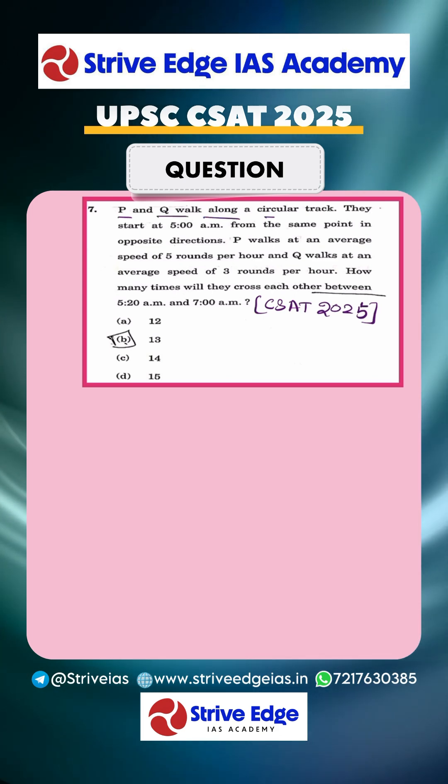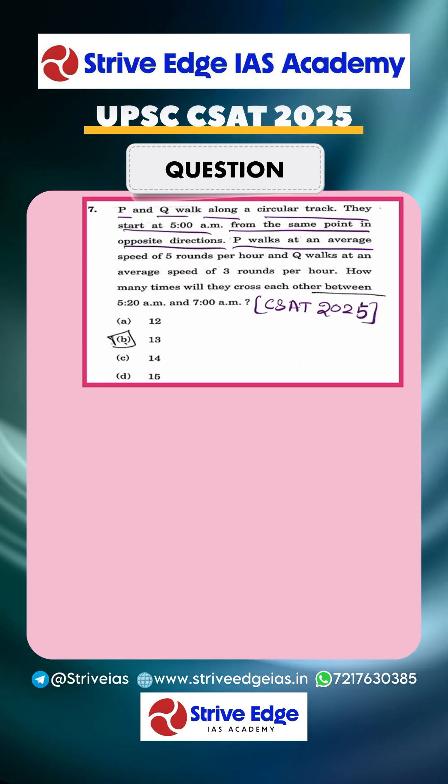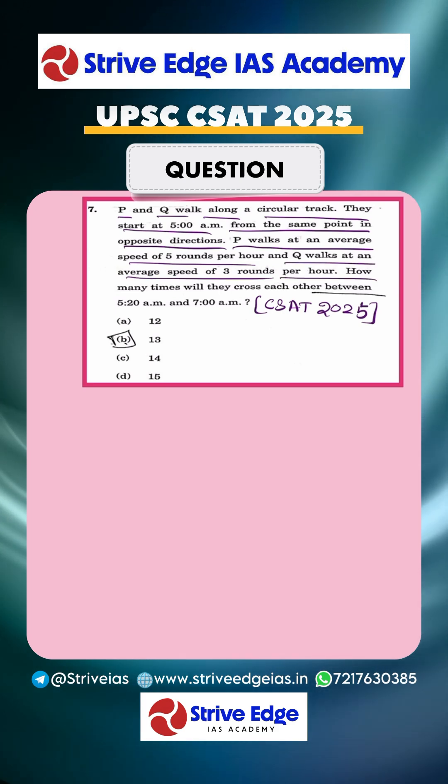P and Q walk along a circular track. They start at 5 p.m. from the same point in opposite directions. P walks at an average of 5 rounds per hour, Q walks at an average of 3 rounds per hour. How many times will they cross each other between 5:20 a.m. to 7:20 a.m.?